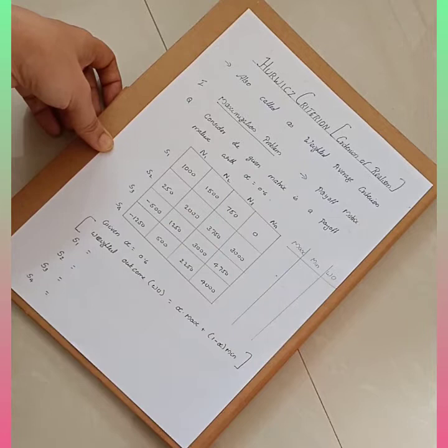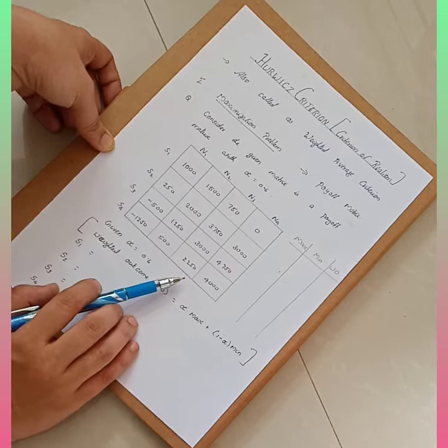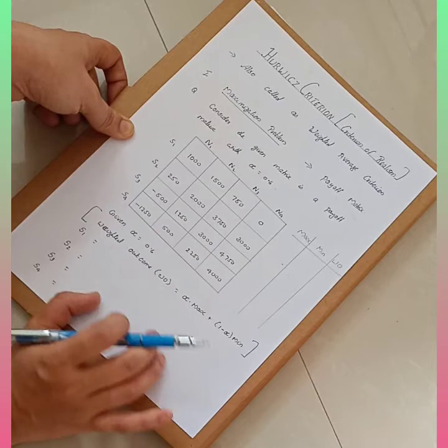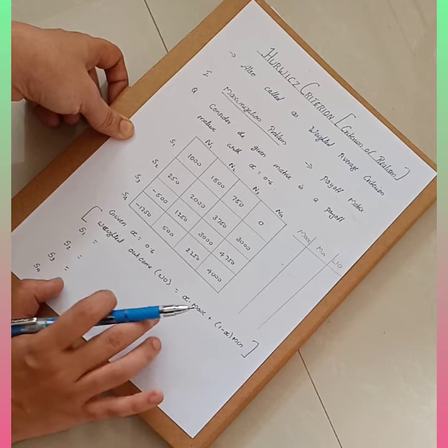It is also called the weighted average criterion. Depending upon the question, we can categorize it into two different types of problems: a maximization problem and a minimization problem when it comes under Hurwicz criterion. For maximization problems there is one particular formula for calculating the weighted outcome, and for minimization problems the formula will be different. So you have to be careful while solving — first identify what type of problem it is.